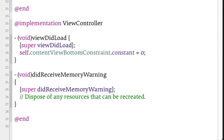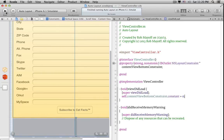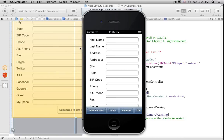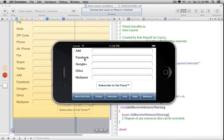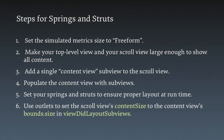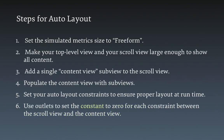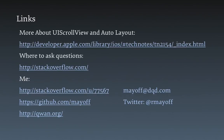That tells the Scroll View that it should only scroll to the bottom edge of the Content View. Let's run the project again. Now it stops scrolling where it should. Wrapping up, here are the steps involved when we're using Springs and Struts, and here are the steps involved when using Auto Layout. If you need more help getting your ScrollView working with Auto Layout, check out this tech note. If you need more help after that, go to Stack Overflow and post a question. And here are some links to other things I've done and ways to contact me.